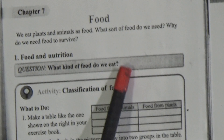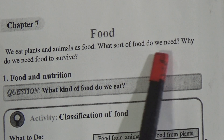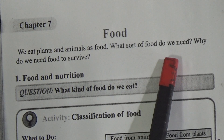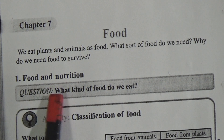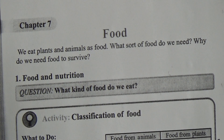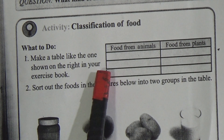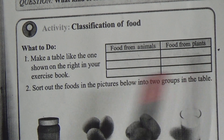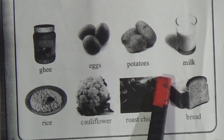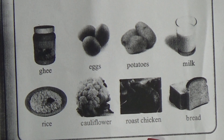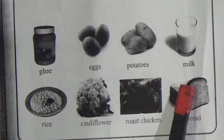Let's start our class. Follow this class with your textbook. This is Chapter Seven: Food. We eat plants and animals as food. What sort of food do we need? Why do we need food? To survive. Here is a box — you have to find out which food we get from animals and which food we get from plants.